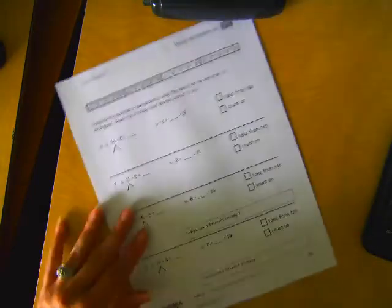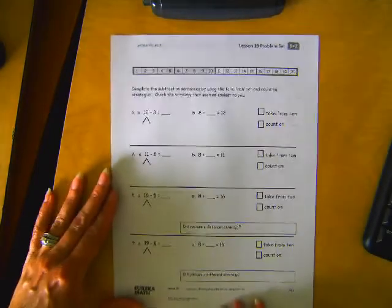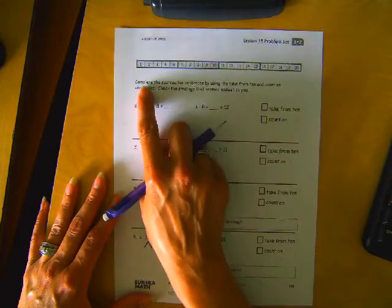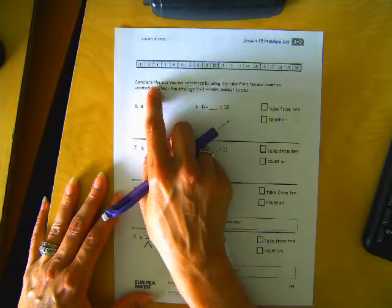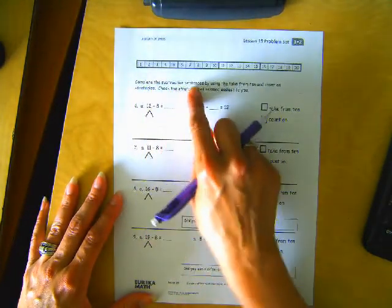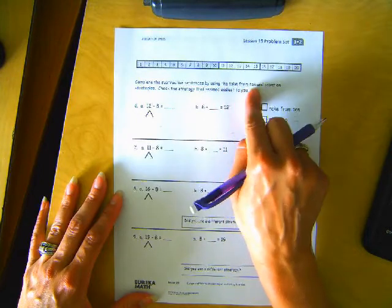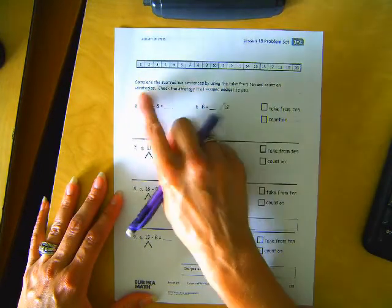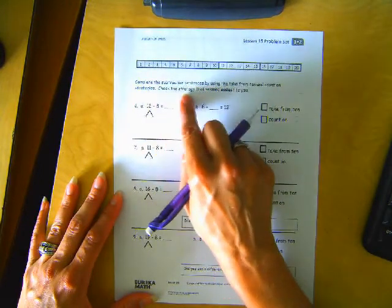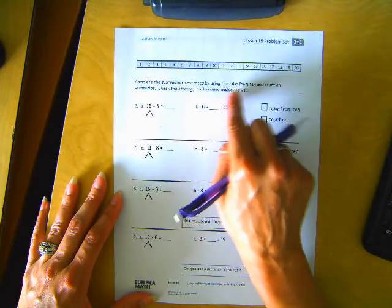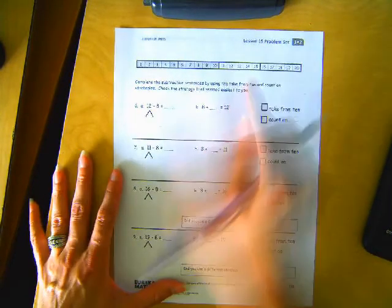Let's turn it over. Let's read the directions. Complete the subtraction sentences by using the take from 10 and count on strategies. Check the strategy that seemed easiest to you. Okay.